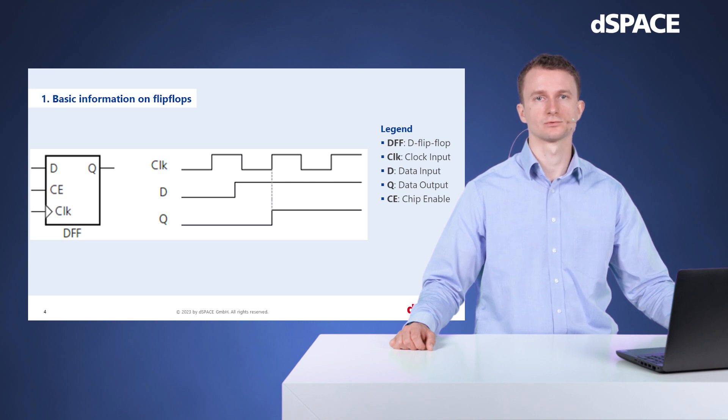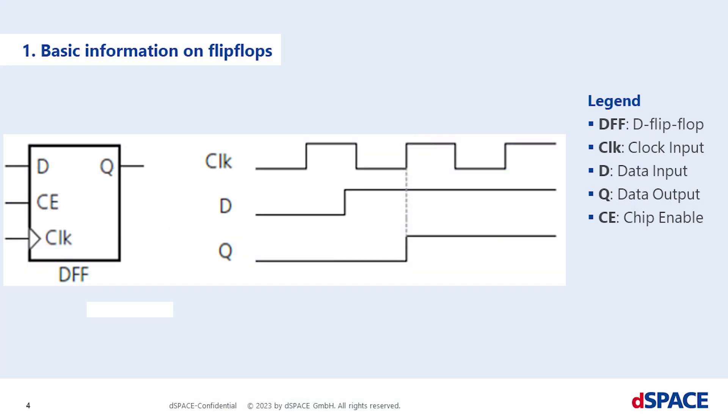The following illustration shows a D flip-flop DFF and its signal as an example. CLK is the clock input, CE the chip enable, D the data input, and Q the data output. The state of the data output changes synchronously to the clock input. With the rising edge of the clock, the flip-flop outputs the state of the data input. The chip enable port enables the chip.